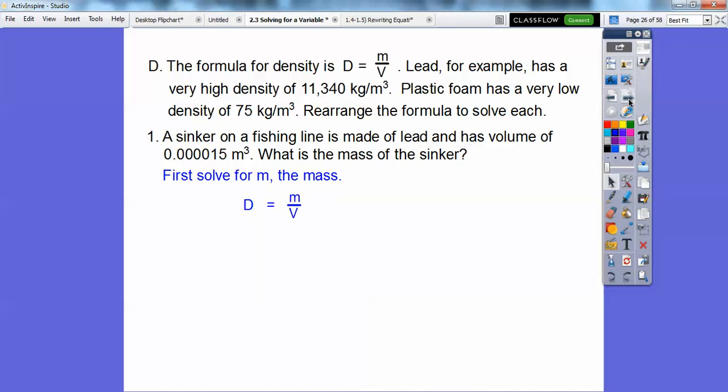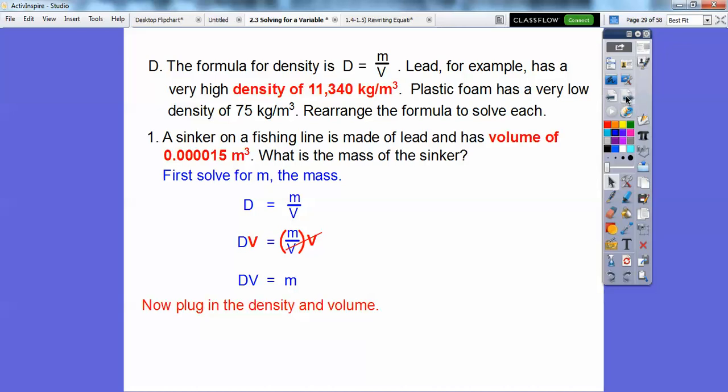So there's our formula. Then we're going to multiply both sides by V to get the V's to cancel. So we get DV equals M. Well now it's all solved for M. So now all we've got to do is plug in the density and the volume. We're just going to plug that in and pick up our calculators and when we multiply that we get about 0.17 kilograms. Notice the mass cubed on the denominator cancels out with this mass cubed in the numerator.